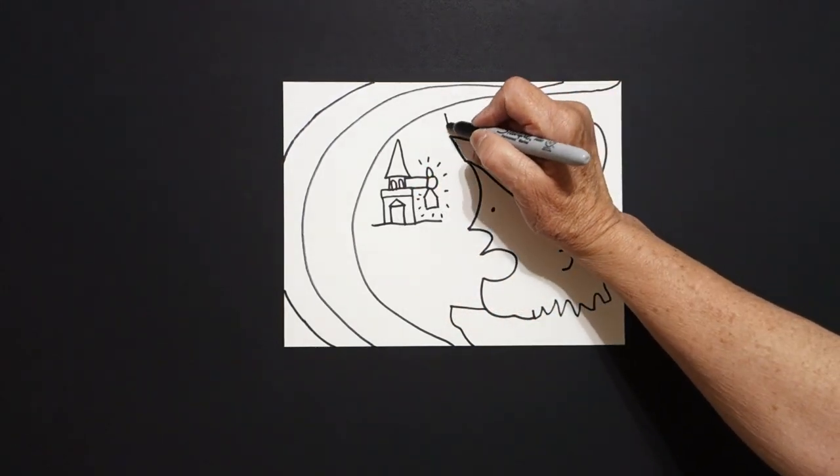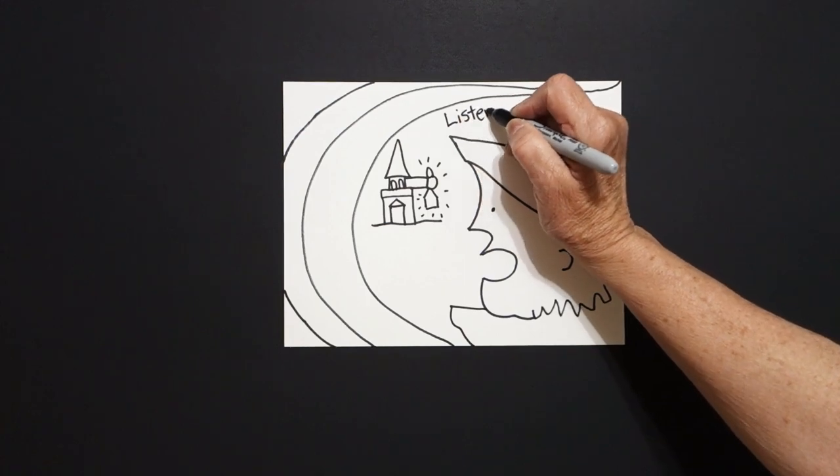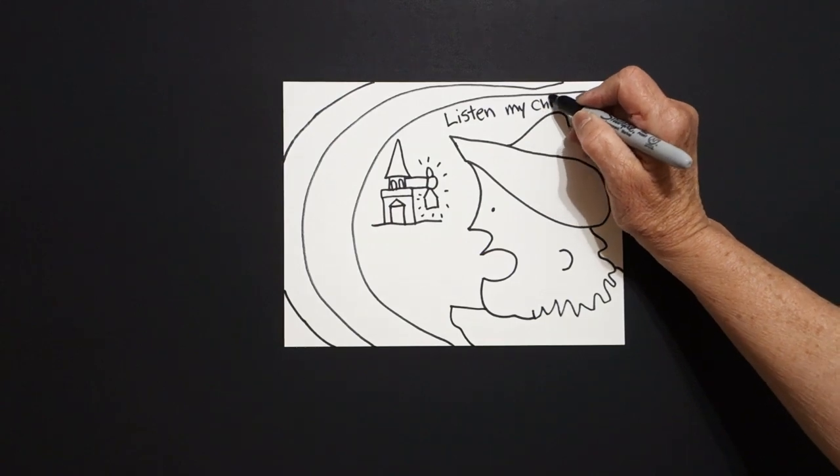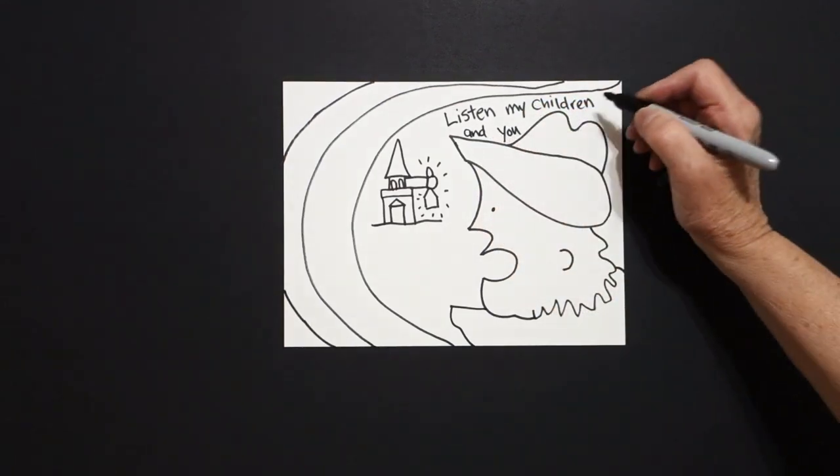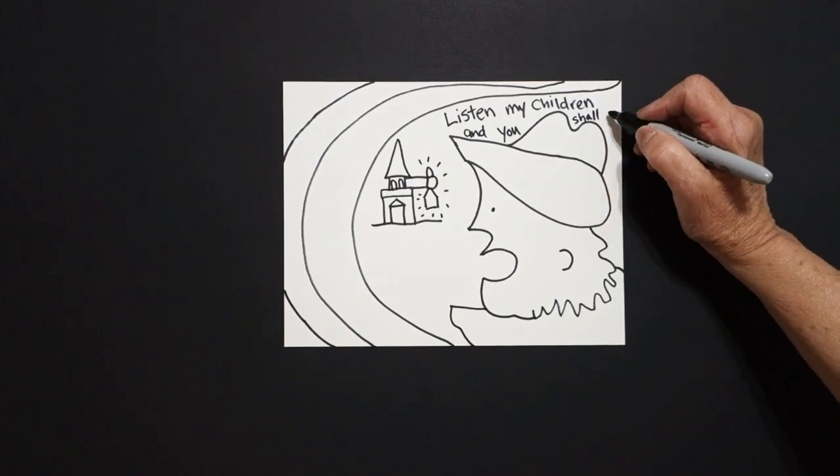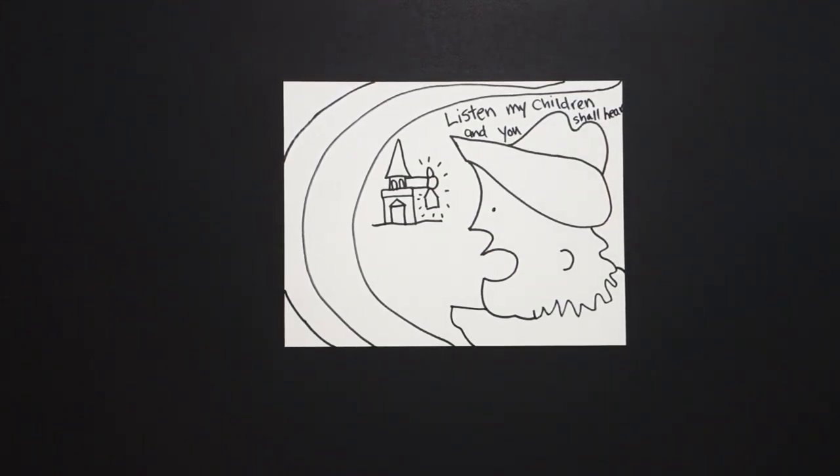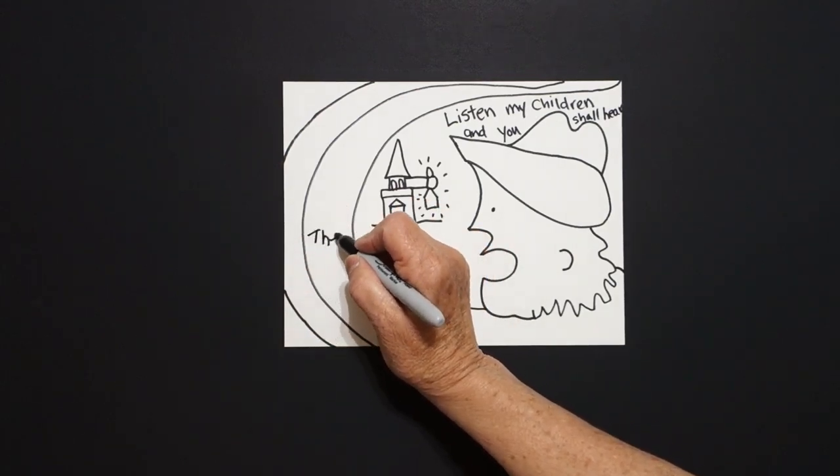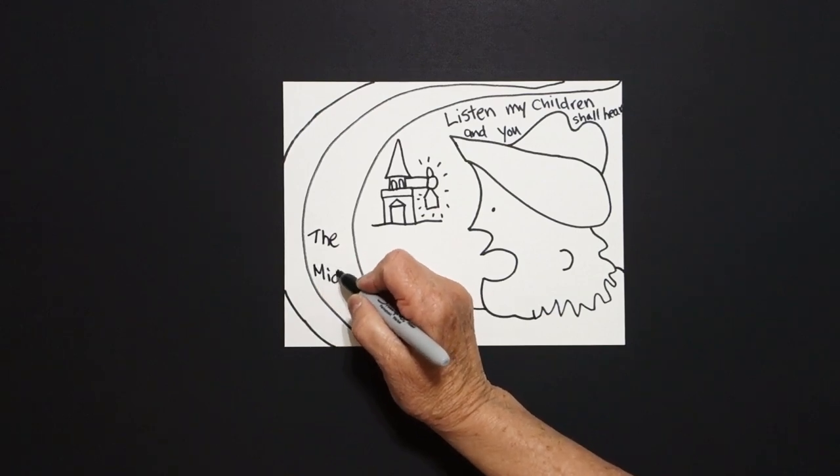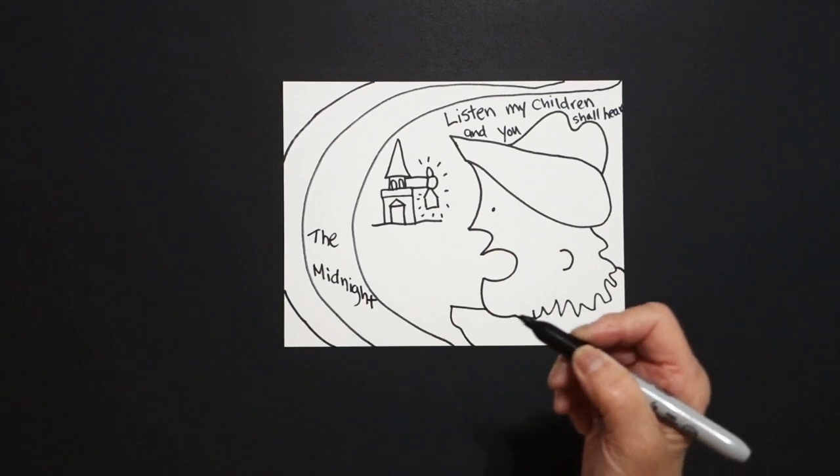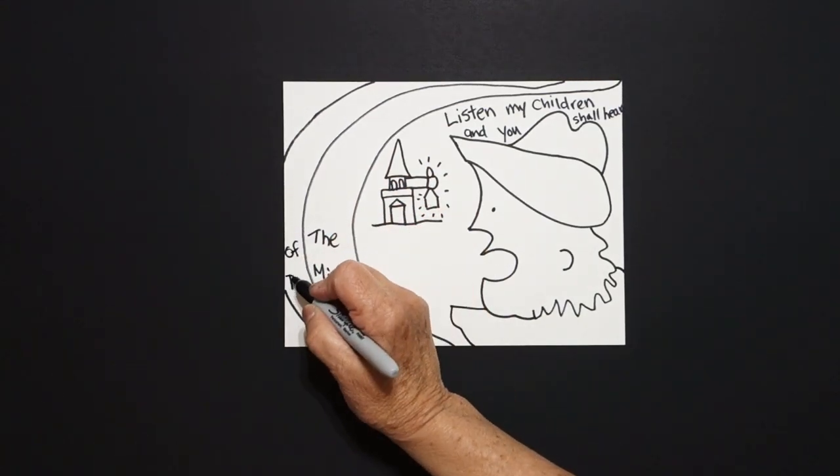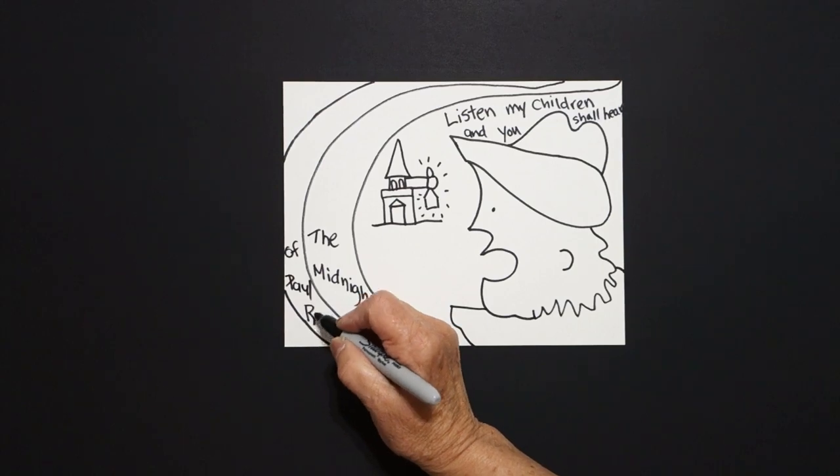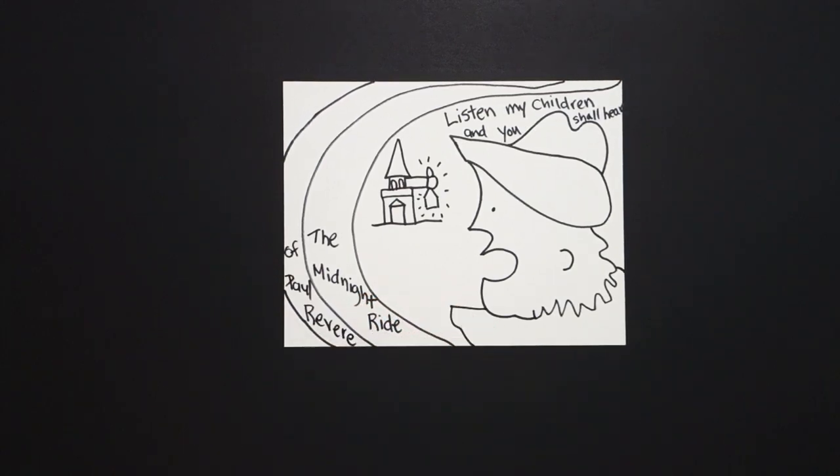Right up here, I'm going to start by writing, listen, my children, and you shall hear. I'll explain that in just a minute. Because now I come over to this space, and I write, the midnight ride, come up a little bit over here, of Paul Revere. And you're probably all going, what? All right, we'll explain it once we start filling in everything with color.